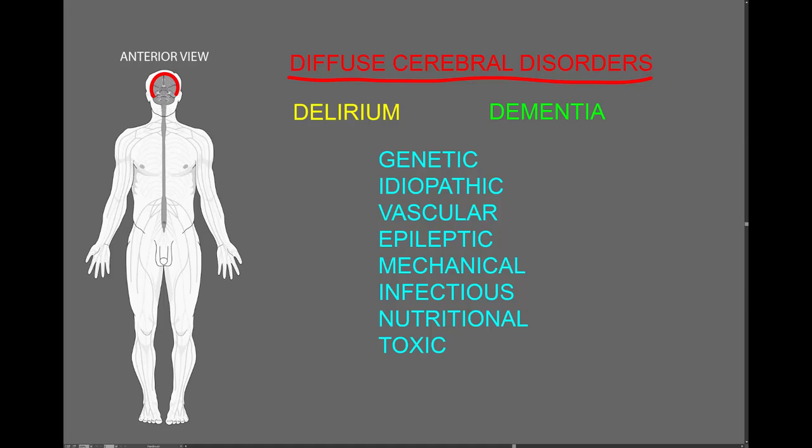Seizures may involve most of the cerebral cortex at onset, which are called generalized seizures, or there may be seizures that start focally in one area, like one lobe of the brain, but then secondarily generalize to involve most of the cerebral cortex.